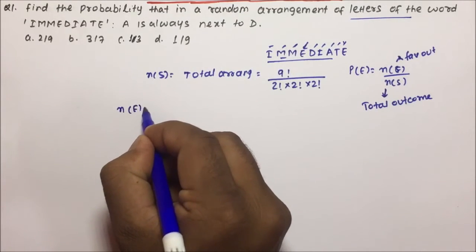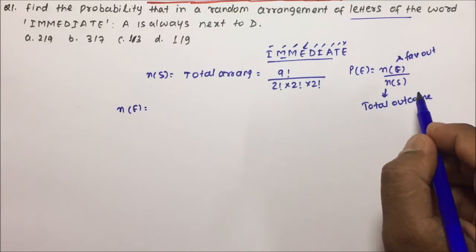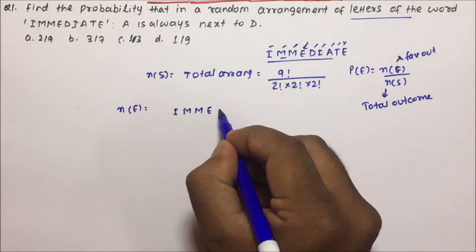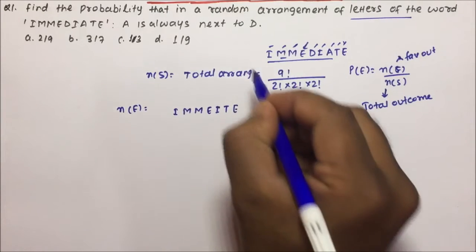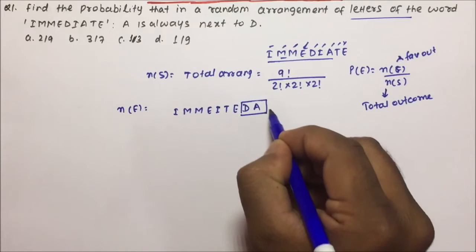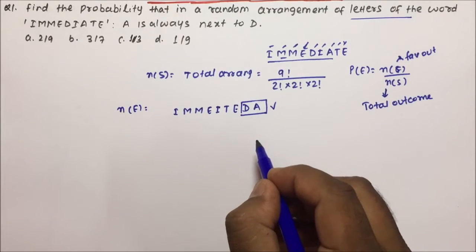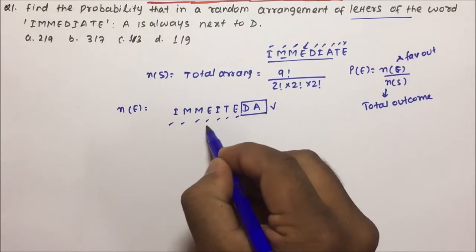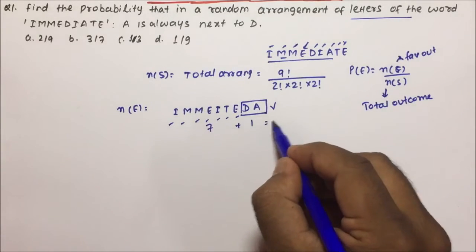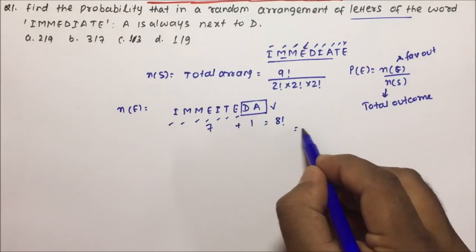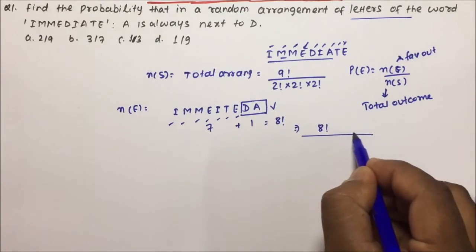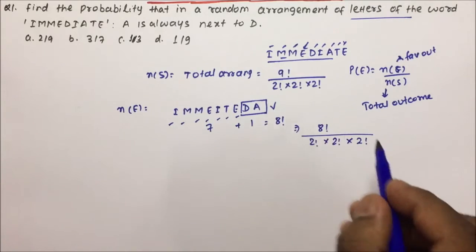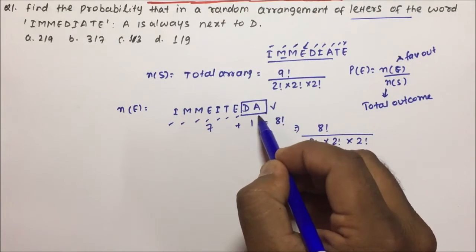Now let's talk about NE — the arrangement in which A is always next to D. The letters are: I, M, M, E, I, T, E, and then DA kept inside a box so that A is always next to D. Counting the units: 1, 2, 3, 4, 5, 6, 7 plus 1 box = 8 letters total. So the arrangement will be 8! divided by 2! · 2! · 2! (for M, E, and I each repeated twice). This is the arrangement when A is always next to D.